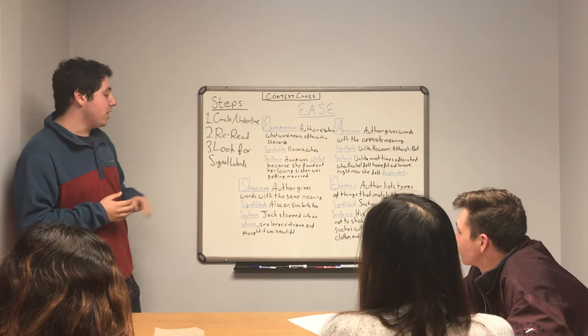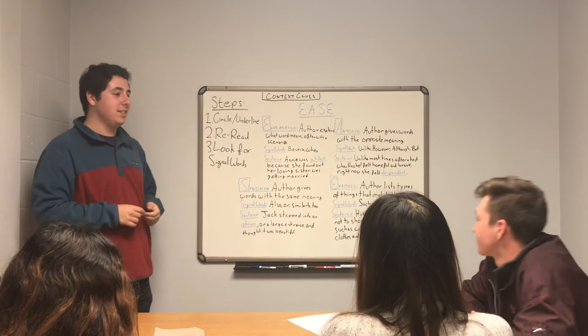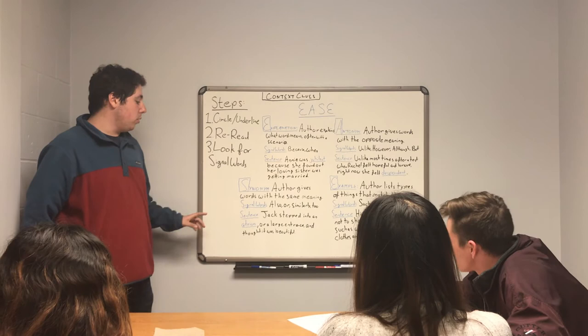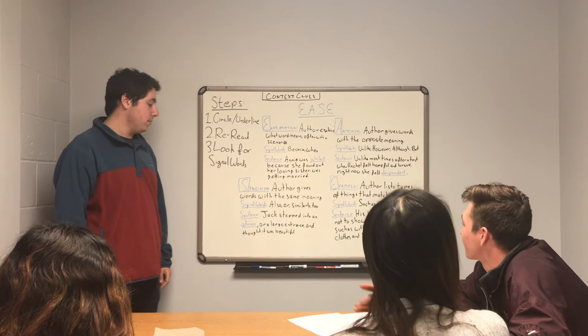Next we have Synonym — when an author gives words with the same meaning. Signal words for this can be 'also,' 'similarly,' or 'or.' Dan reads: 'Jack stepped into an atrium, or a large entrance, and thought it was beautiful.' Atrium means a large entrance, and we know it's a synonym clue because of the signal word 'or.'